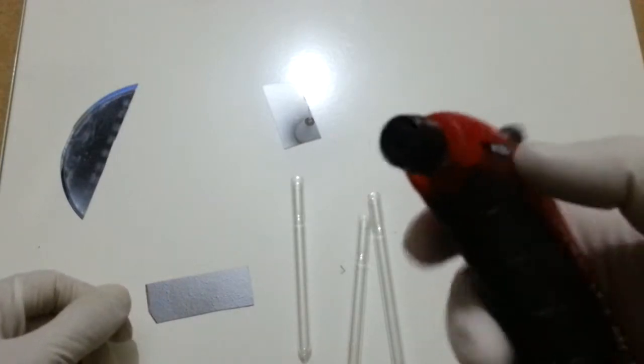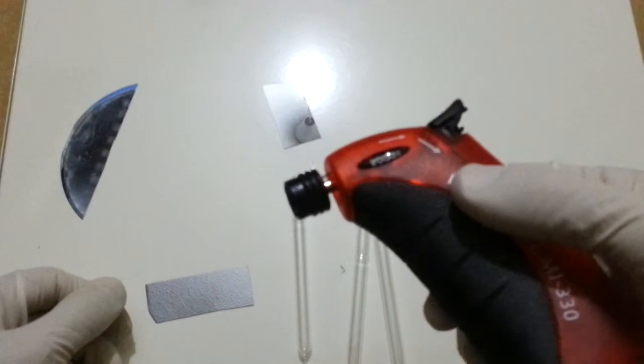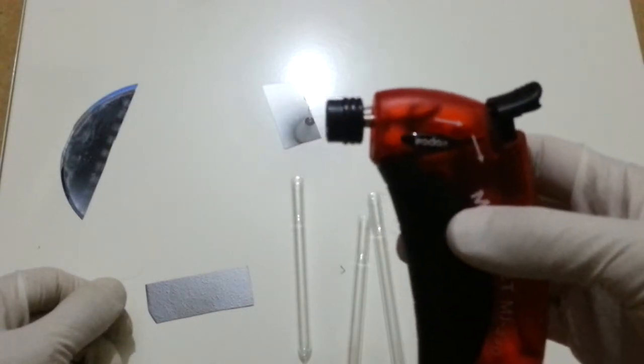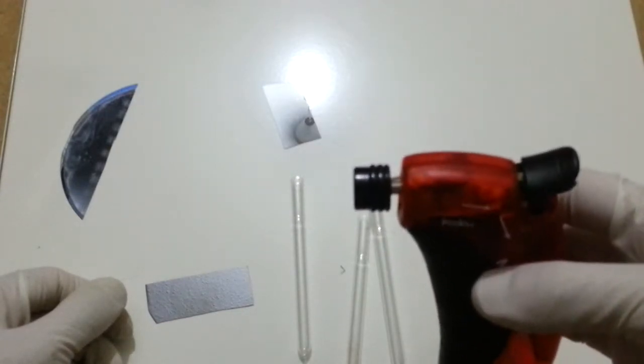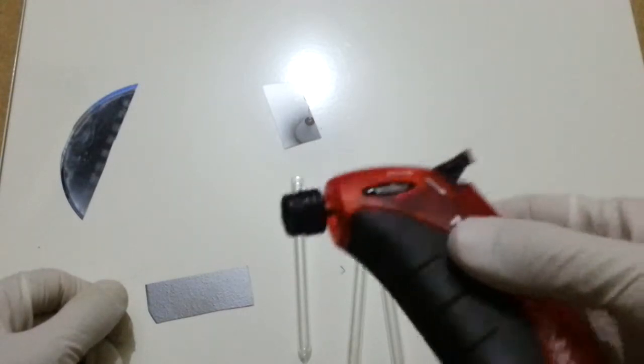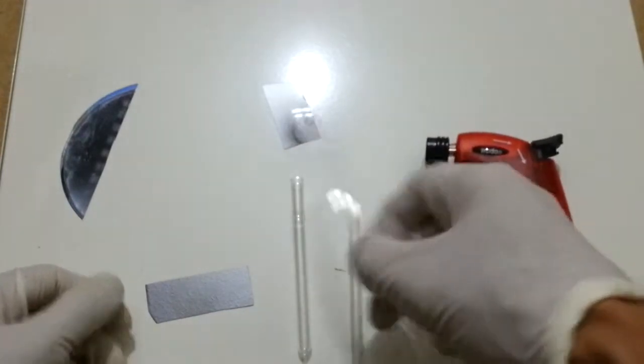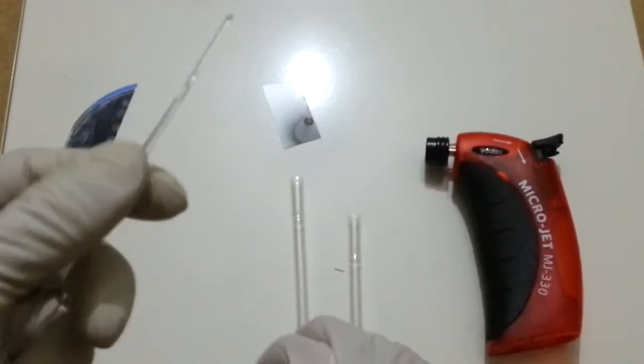And then you need a gas torch. A mini portable gas torch like this is sufficient because the walls of Pasteur pipettes are so thin. This is enough, and this costs $5 or $6 from China.